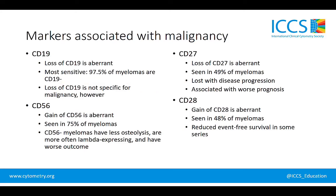We saw from a previous slide that normal plasma cells are CD19 positive, so the loss of CD19 is an aberrant finding. CD19 negativity is a very sensitive marker for plasma cell malignancy. Almost 98% of myelomas are CD19 negative. However, the loss of CD19 is not specific for malignancy, as some reactive plasma cells may be CD19 negative.